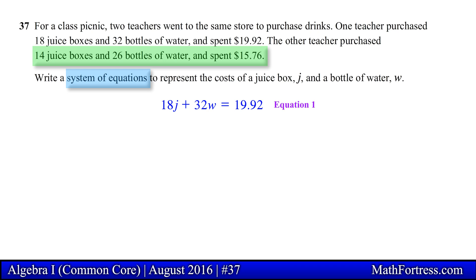Similar to the first equation, we take the number of each item purchased and multiply them with their respective price. The total should equal $15.76. So this is our system of equations.